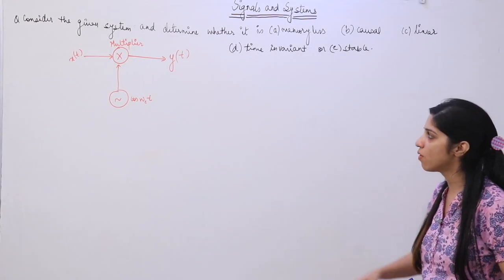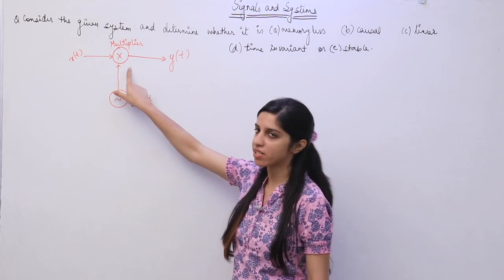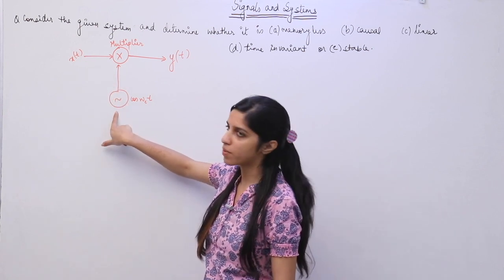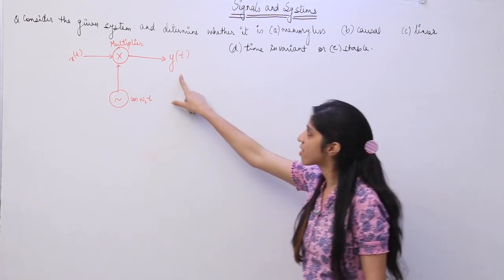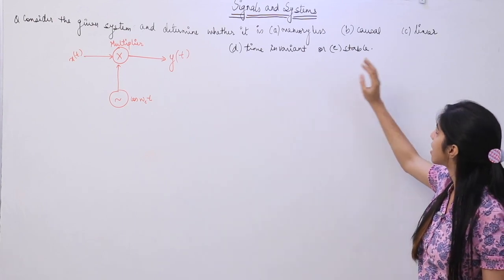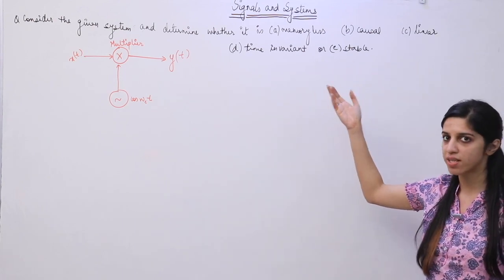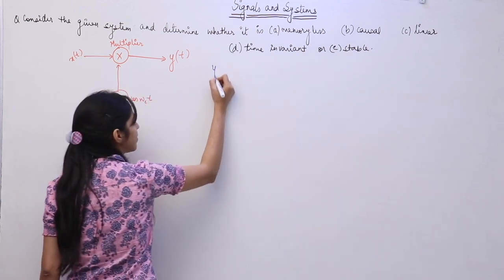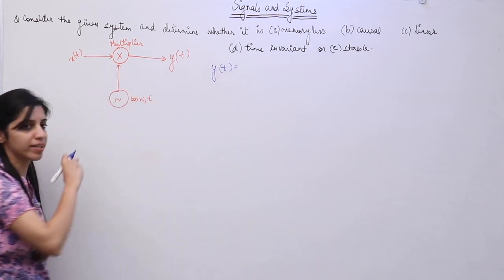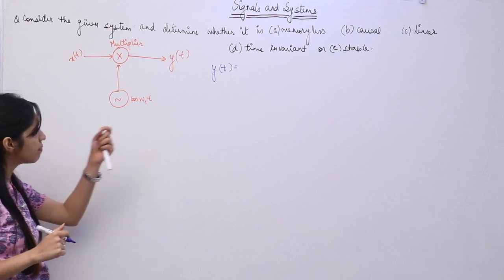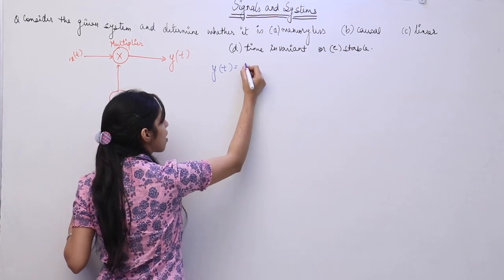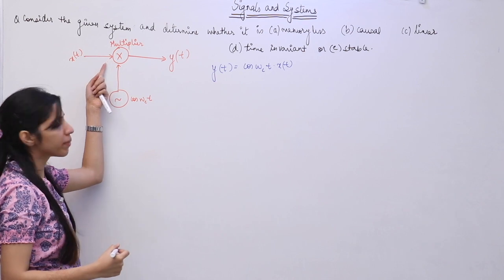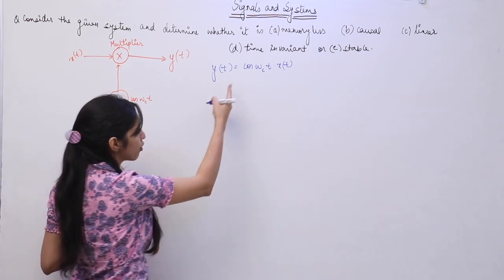We are going to look at a question. They have given a system which is performing a multiplication operation — basically this represents a multiplier. The input is getting multiplied with cos(ωct) and the output is thus obtained. They are asking you to check whether the system is memoryless, causal, linear, time-invariant, and stable. Firstly, I am mathematically modeling the system: output y(t) is equal to cos(ωct) times x(t).